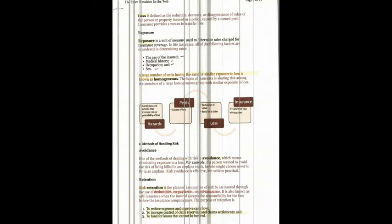Loss is defined as a reduction, decrease, or disappearance of value of personal property insured in a policy, caused by a named peril. Insurance provides a means to transfer that loss. Exposures are the unit of measure used to determine the rate charged for insurance coverage. In life insurance, factors considered in determining rates include age, medical history, occupation, and sex. A large number of units with similar exposure to loss is known as a homogeneous group.